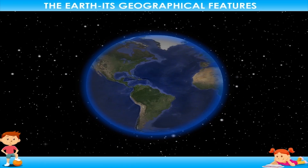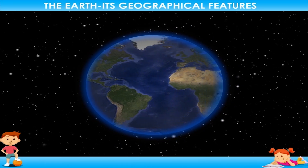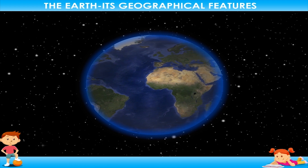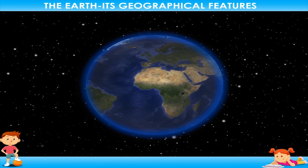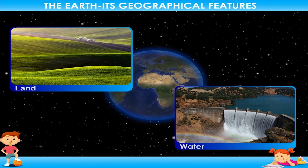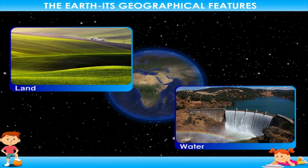Our planet, Earth, is a unique planet. It is the home of living beings. It is covered with land and water masses on its surface.